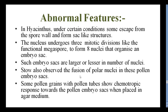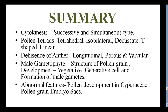In summary: Cytokinesis during microsporogenesis occurs as successive type or simultaneous type. Pollen tetrads may be arranged as tetrahedral, isobilateral, decusate, T-shaped, or linear. Dehiscence of the anther may be longitudinal, porous, or valvular. Male gametophyte development involves vegetative and generative cell formation, followed by division into male gametes. Abnormal features include pollen development in cyparese and the Nemec phenomenon in embryo sacs.